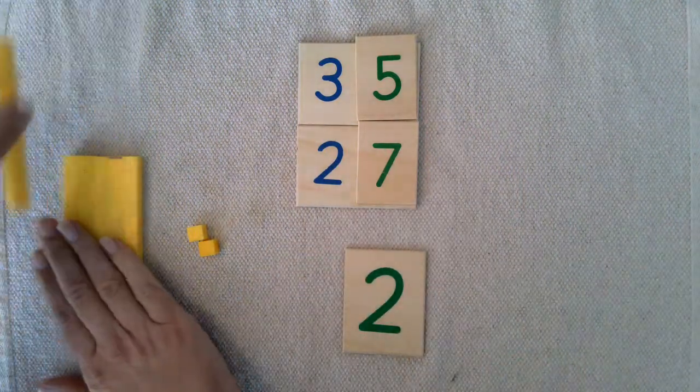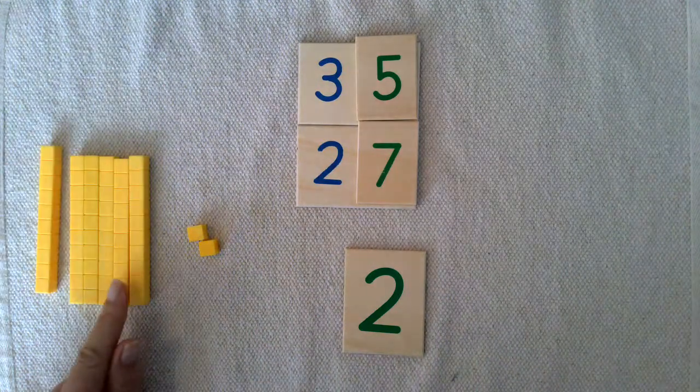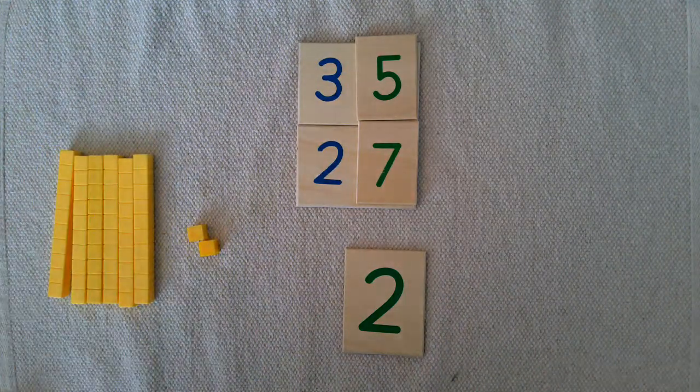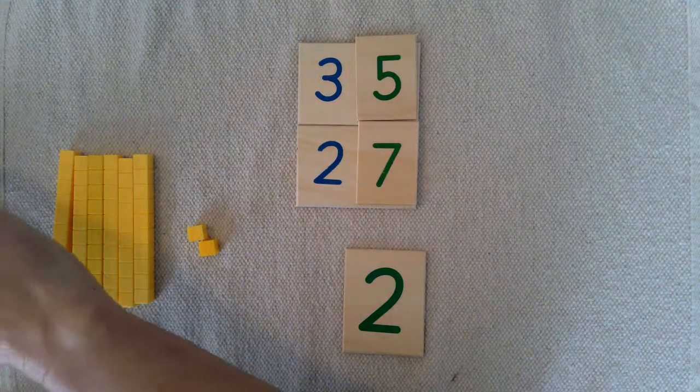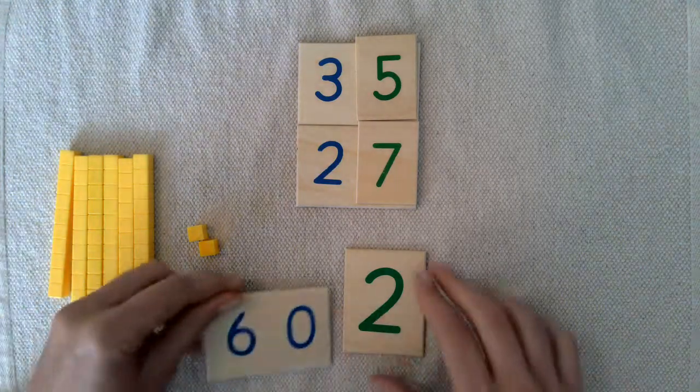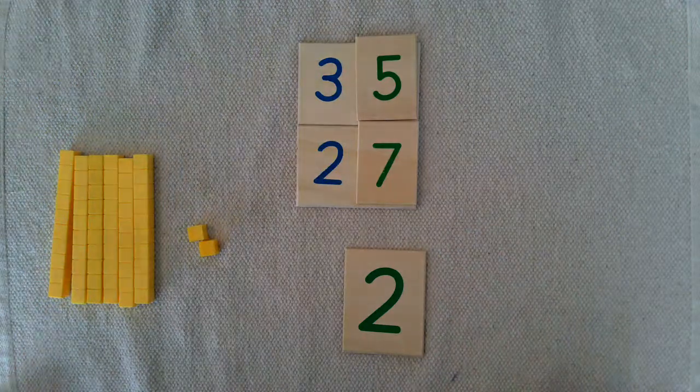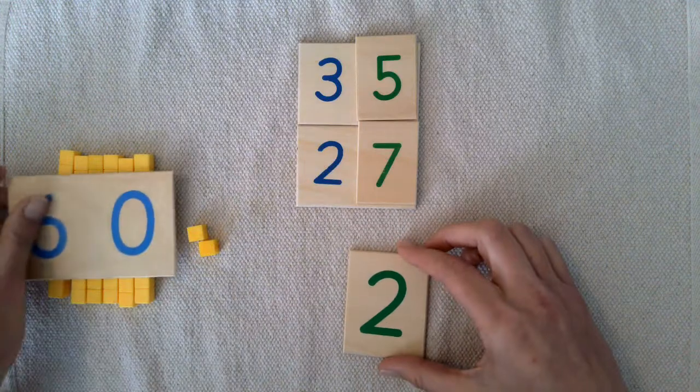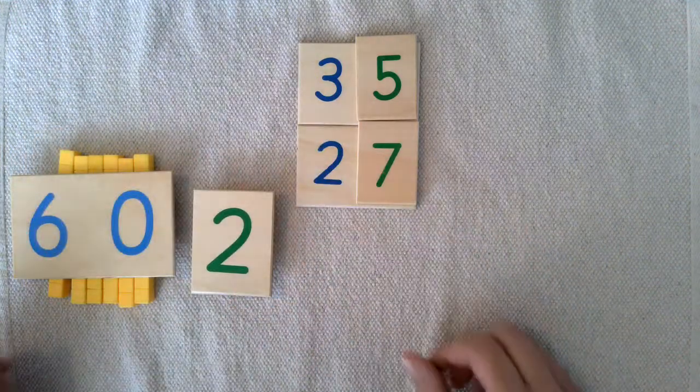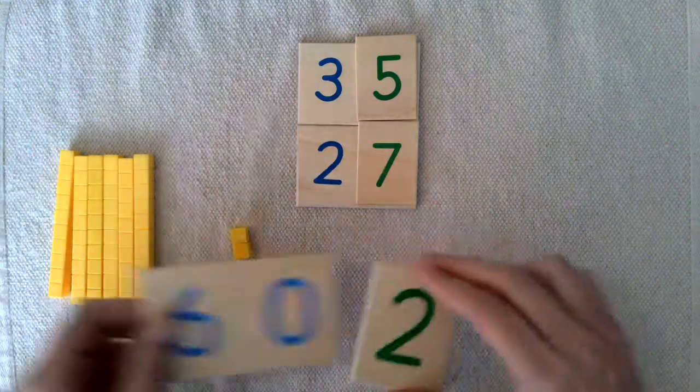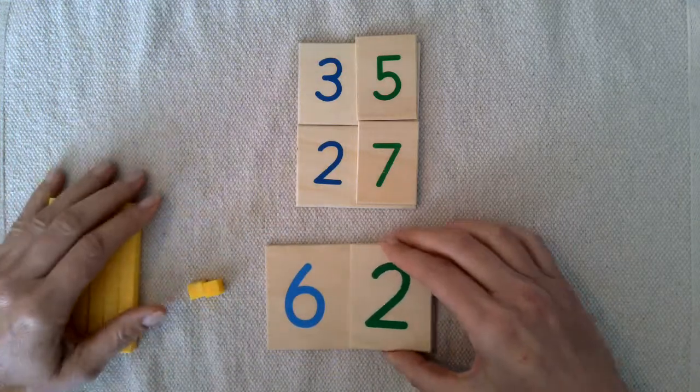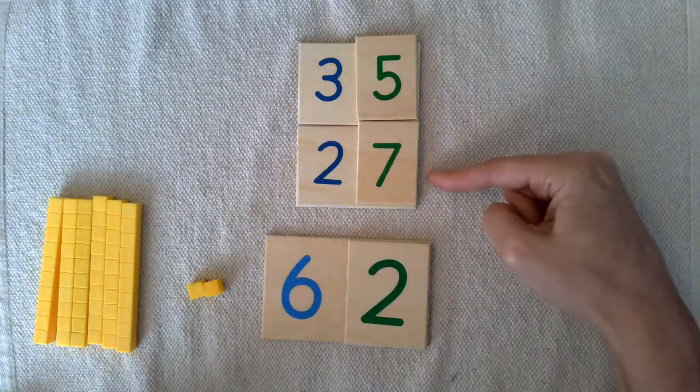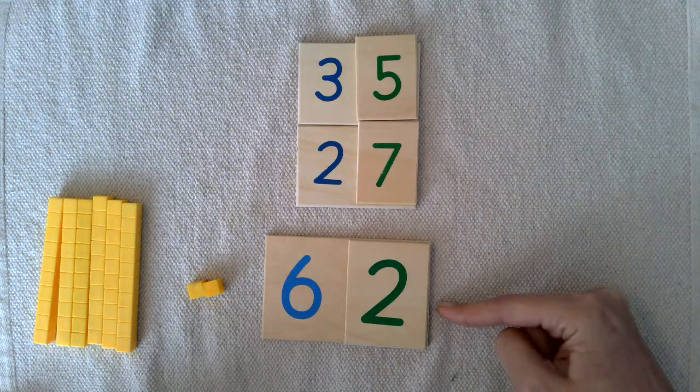And let's put our tens together. We have one, two, three, four, five, six tens. 35 and 27 equals 62.